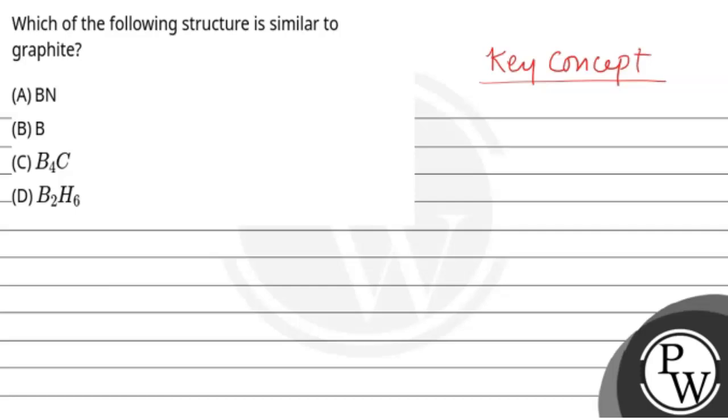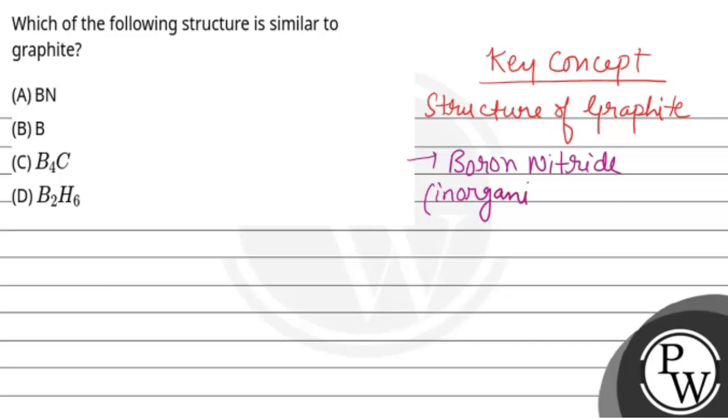The first option given is BN, that is boron nitride. Boron nitride is also known as inorganic graphite because its structure is similar to graphite structure. Its most stable form is hexagonal.